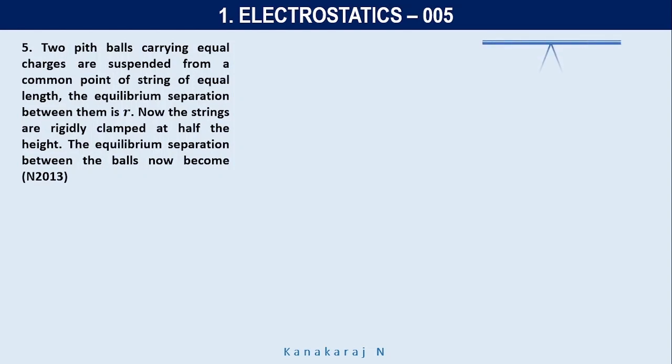Here you have a ceiling. From the common point, the two pith balls are hanging like a simple pendulum. They are separated by a distance R. The length of the pendulum is L and the distance of separation is R. Now the vertical distance is Y. The angle what it makes with L is theta.